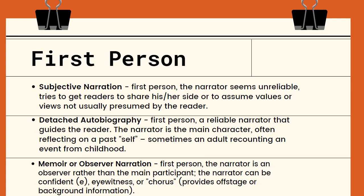The next type is subjective narration, where the first person narrator seems unreliable and tries to get readers to share his or her side, or to assume values not usually presumed by the reader. It is called subjective because the story is told through the lens of one character — limited to what that narrator feels, thinks, and knows. An example is anti-hero characters who are convincing readers and trying to justify their actions.